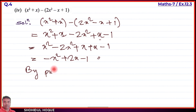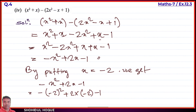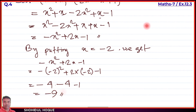By putting x equal to minus 2, we get: minus (minus 2) square plus 2 into (minus 2) minus 1. Minus 2 squared is plus 4, so minus 4. Plus 2 into minus 2 is minus 4. Minus 1. So minus 4 minus 4 minus 1 equals negative 9. The answer is minus 9.